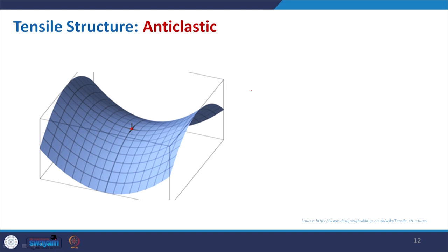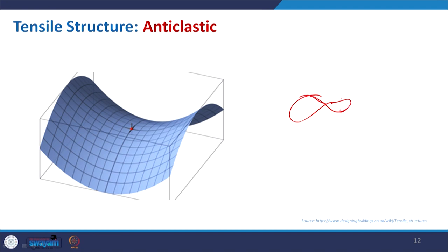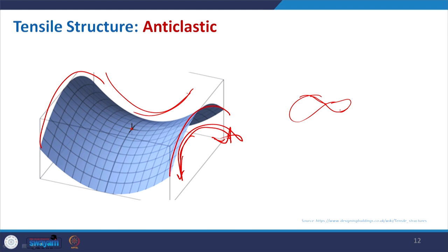This is very important — the anticlastic. As mentioned, this is basically a plane having curvature but in opposite directions. A very easy example: if you go and purchase some potato chips, many of the chips have this particular form. Here you have curvature in one direction and at the same time curvature in another direction — the same plane arranged with two curvatures having opposite directions. This is very important to know for anticlastic.